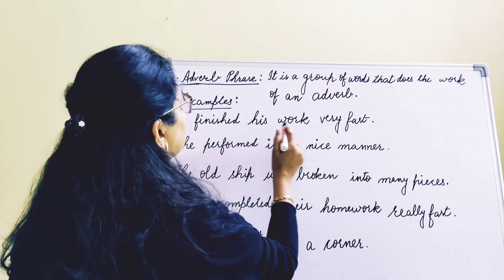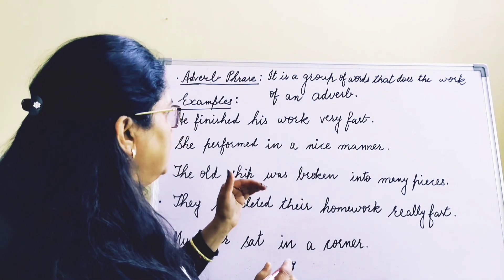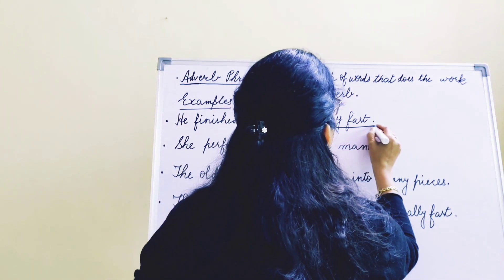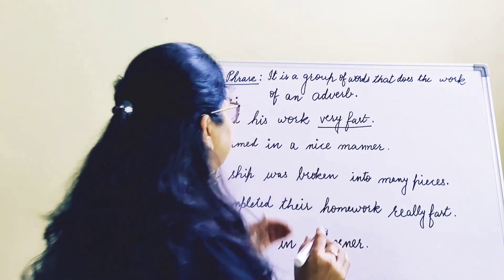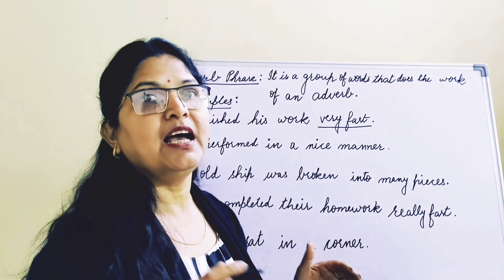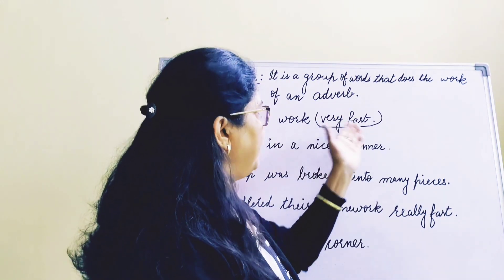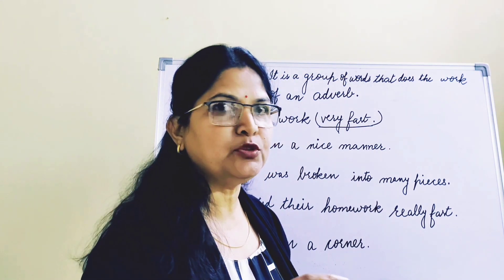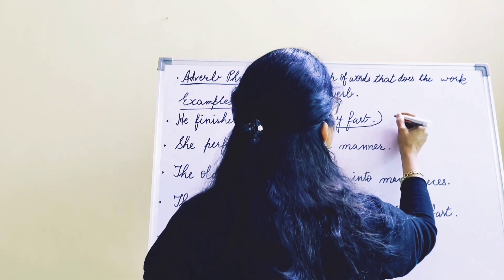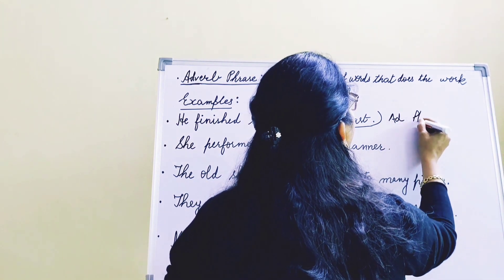Here: 'He finished his work very fast.' He finished his work — how? Very fast. If I had said 'he finished his work fast,' then fast is an adverb. But 'very fast' — very is adding extra information to the adverb fast. That's the reason 'very fast' is an adverb phrase.